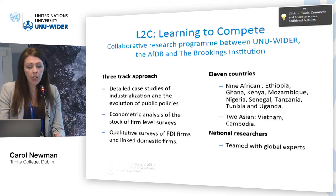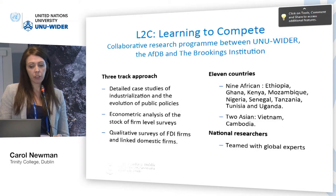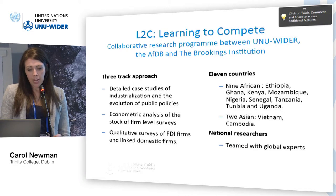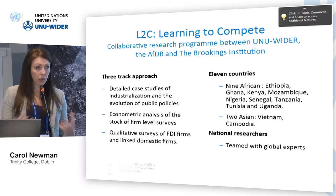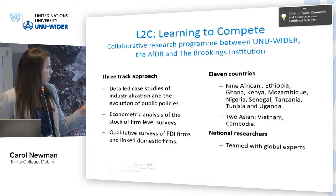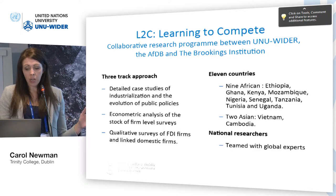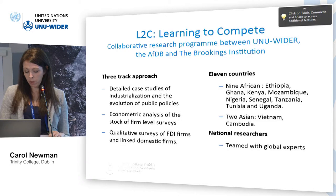Speaking first about firm capabilities: this project we've been involved in for a number of years is a collaborative project with UNU-WIDER, the African Development Bank and the Brookings Institution. It involved Finn, myself, John Rand, Munsu Debrum, John Page, and Abeba Shimalis. We had very detailed case studies of industrialization and the evolution of public policies, brought together quantitative firm-level data and surveys from a number of countries, and did an interesting qualitative survey. It involved nine African countries and two Asian countries, teaming national and local team members with global experts.